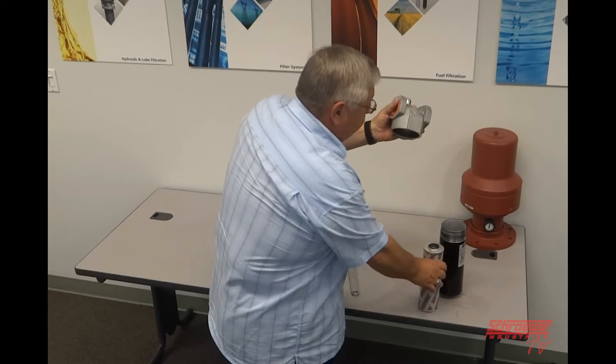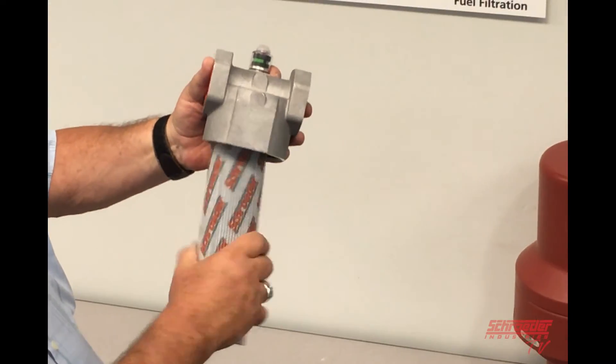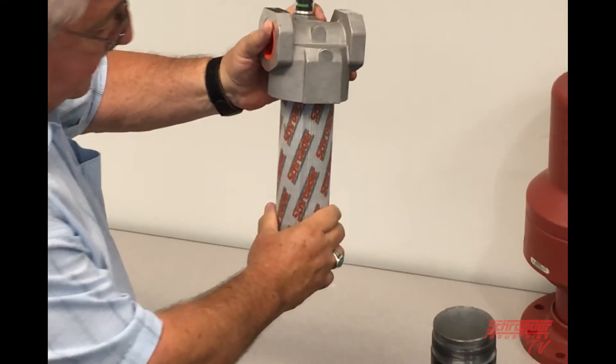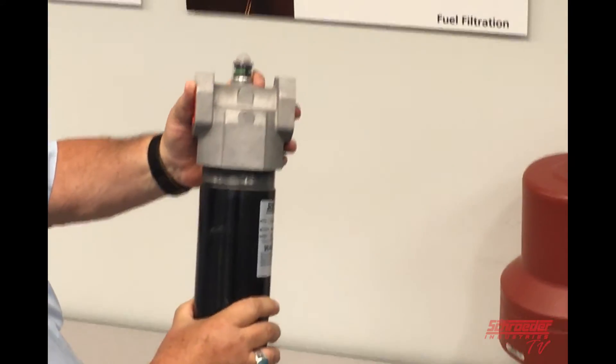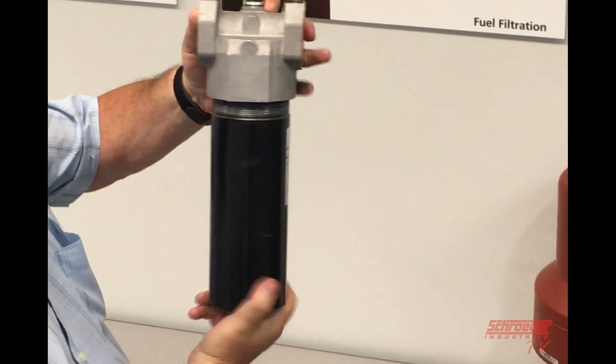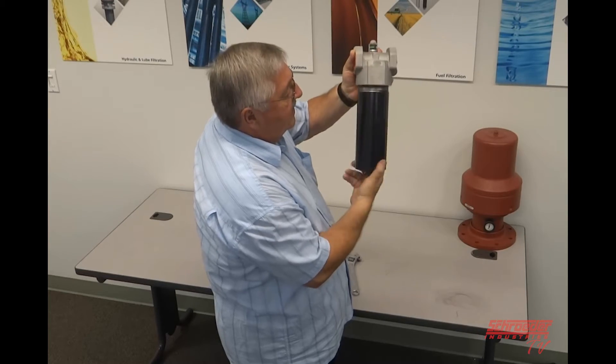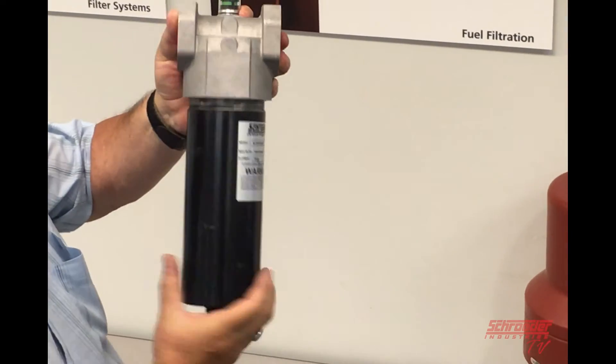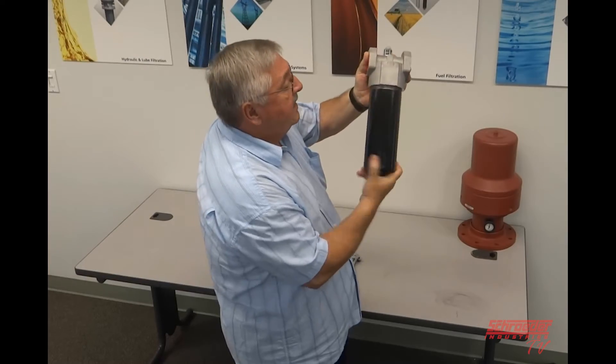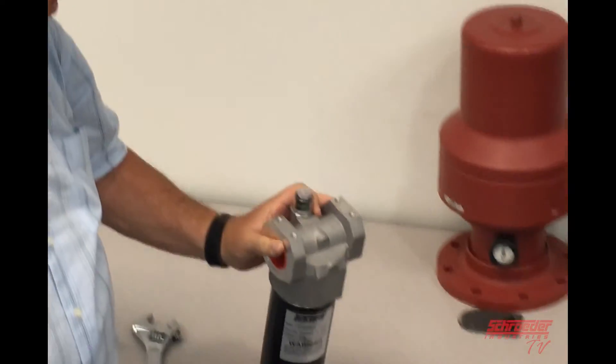You take your new element. Push it back up on the guide tube like that. Take your bowl and put it up inside. And just screw it back together. And take it all the way down until it stops. Put a wrench on it and take it about a quarter turn and it's sealed in place. And that's your element change. It's very simple.